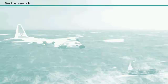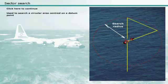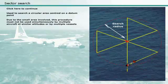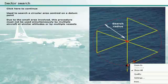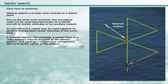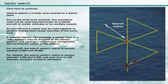Sector search is most effective when the position of the search object is accurately known and the search area is small. Due to the small area involved, this procedure must not be used simultaneously by multiple aircraft at similar altitudes or by multiple vessels. An aircraft and a vessel may be used together to perform independent sector searches of the same area. A suitable marker may be dropped at the datum position and used as a reference marking the centre of the pattern. For aircraft, the search pattern radius is usually between 5 and 20 nautical miles. For vessels, the radius is usually between 2 and 5 nautical miles, and each turn is 120 degrees, normally turned to starboard.